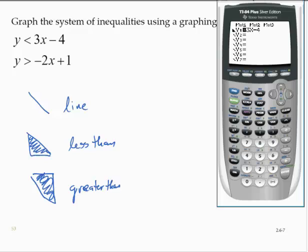For the y2, I want a greater than. So I'll go ahead and cycle through. There's the greater than. And my y2 is negative 2x plus 1.